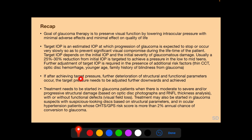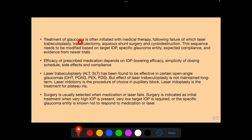If after achieving target pressure further deterioration of structural and functional parameters occurs, the target pressure needs to be adjusted further downwards. Treatment needs to be started in glaucoma patients when there is moderate to severe and/or progressive structural damage with or without functional deficits. Treatment may also be started in glaucoma suspects with suspicious structural parameters and in ocular hypertension patients whose OHDS-EGPS risk score is more than 2% annual chance of conversion to glaucoma. Treatment of glaucoma is often initiated with medical therapy, and following its failure, laser trabeculoplasty, trabeculectomy, aqueous shunt surgery, and cyclo-destruction are sequentially selected.